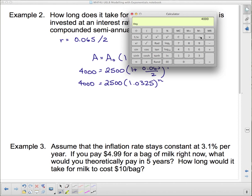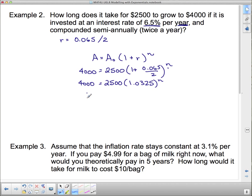And then this is 4000. Now I want to take 4000 and divide it by 2500 because I need just one number equal to an expression so I can take the log of both sides. So we do 4000 divide it by 2500 and that's going to give me 1.6. And that's going to equal 1.0325 to the n. Now we're going to take the log of both sides.